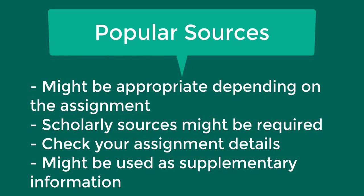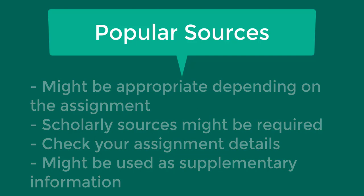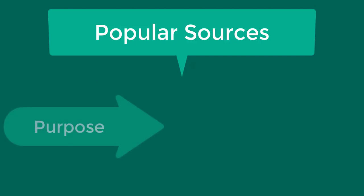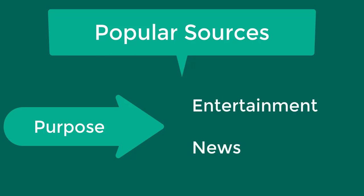Check your assignment details or ask your professor if you're not sure what types of sources are required. You might have a requirement for a certain number of scholarly peer-reviewed sources, but you may also be able to use credible popular sources as supplementary information. The purpose of popular sources is to provide entertainment or news information.